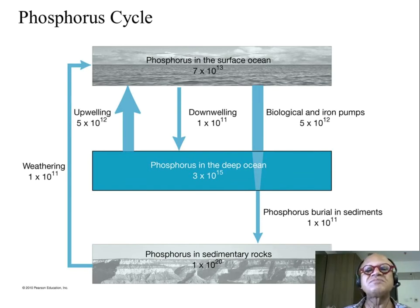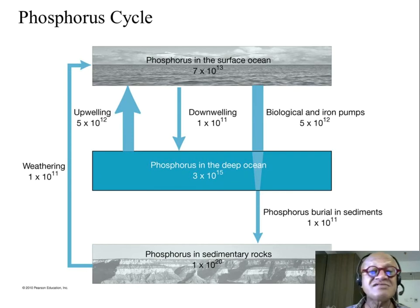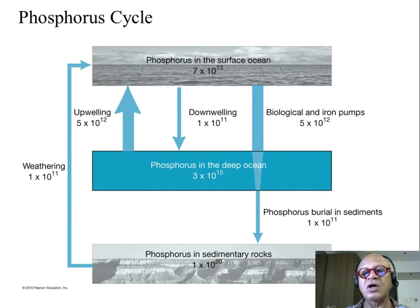This is being perturbed by lots of phosphorus mining in some West African countries and phosphates used in fertilizers. We are changing the runoff and sediment loads. Phosphorus burial in sediments is 1×10^11, which is similar to the downwelling, so these numbers balance.